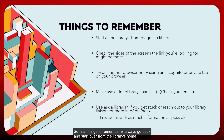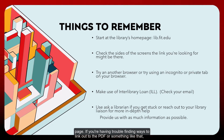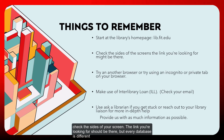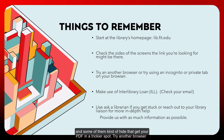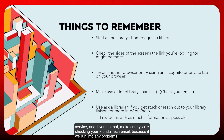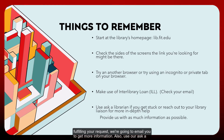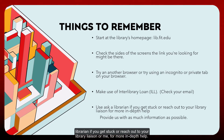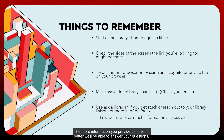Final things to remember: always go back and start from the library's home page. If you're having trouble linking to a PDF, check the sides of your screen — every database is different and some hide the PDF link in a trickier spot. Try another browser or incognito tab. If we don't have the article, make use of our interlibrary loan service and check your Florida Tech email, as we'll email you if there are problems fulfilling your request. Also use our Ask a Librarian service or reach out to your library liaison — the more information you provide, the better we can help.